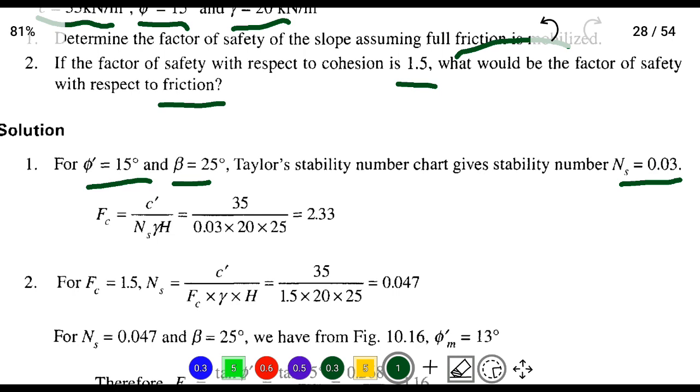We know the formula for factor of safety: Fc = c'/(Ns × γ × H). Substituting the values: c' is 35, divided by Ns from the Taylor chart 0.03, times the unit weight of soil 20, times the height 25 meters. This equals 35/(0.03 × 20 × 25) = 2.33. So the answer for the first question is 2.33.